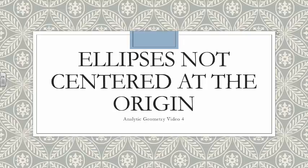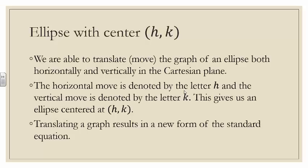This video goes over how to write the standard form of an equation of ellipses not centered at the origin. We are able to translate the graph of an ellipse both horizontally and vertically in the Cartesian coordinate plane. The horizontal move is denoted by the letter h and the vertical move is denoted by the letter k.